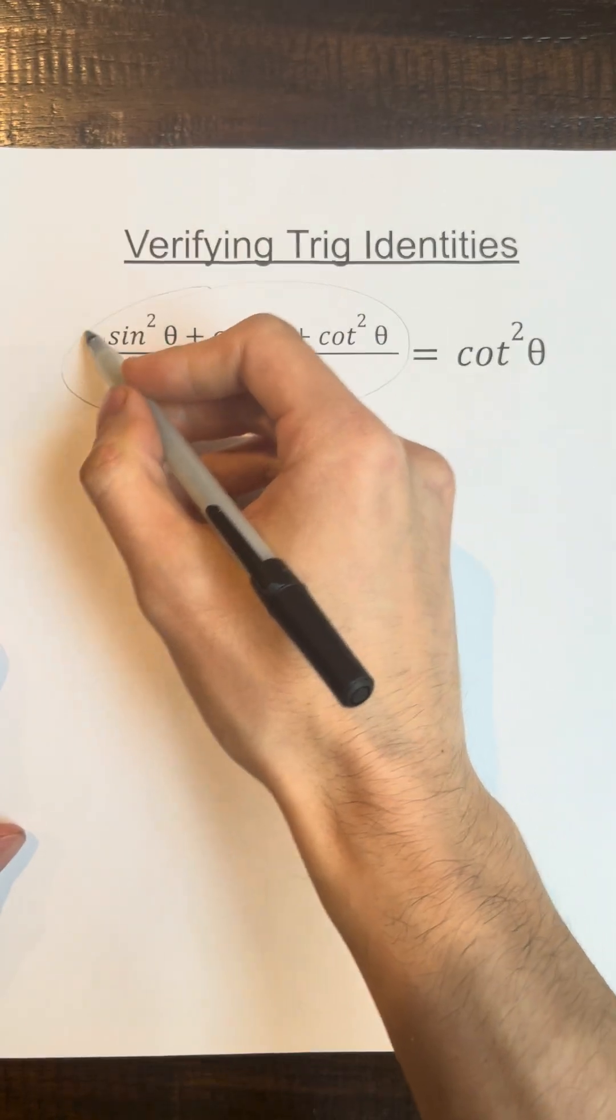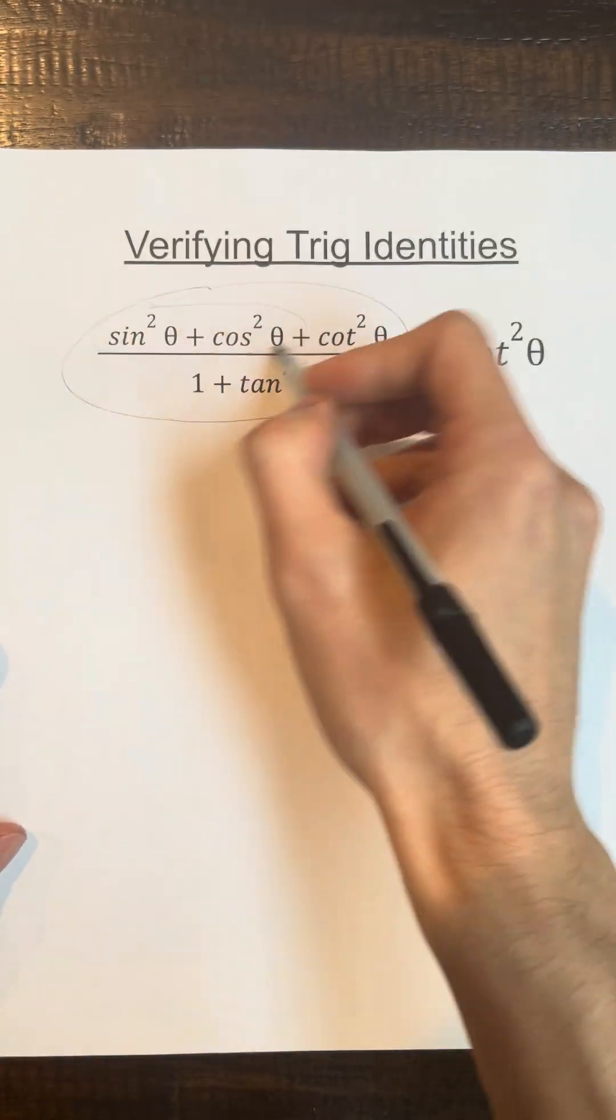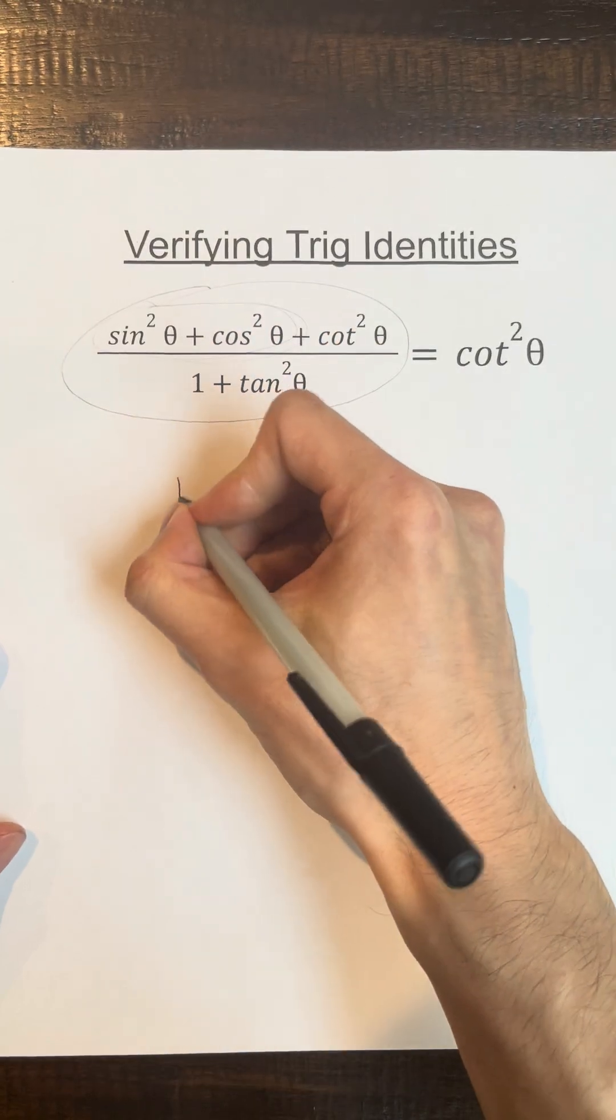If you see sine squared and cosine squared, you need to remember that they add up to 1. So I'm going to change this to 1.